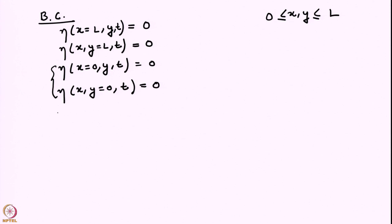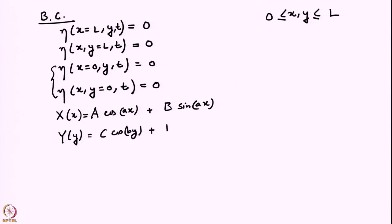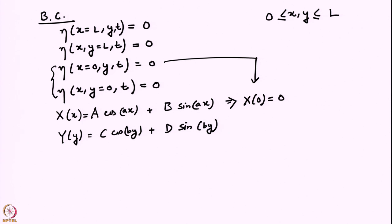Applying the condition at x=0: X(0)=0 implies A=0. Similarly, Y(0)=0 implies C=0. So X(x) = B·sin(ax) and Y(y) = D·sin(by). This tells us we only get a sine series — because of the boundary conditions. It is going to be a two-dimensional sine series: a sine along x and another sine along y.